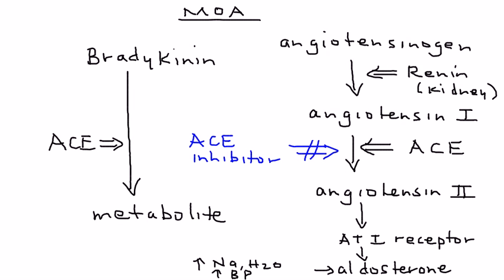When you have an ACE inhibitor being used, that blocks this step also. So when that step is blocked, bradykinin accumulates. And it's the accumulation of this bradykinin that causes the cough and the angioedema.